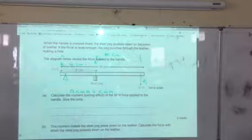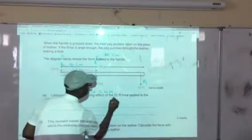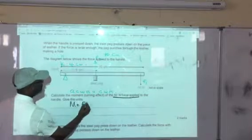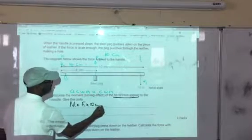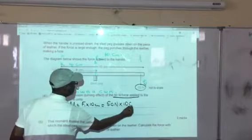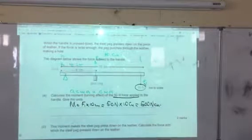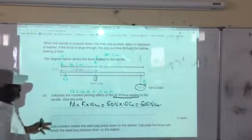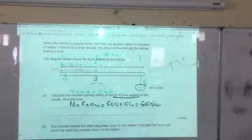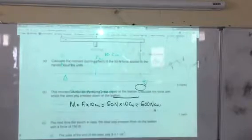Give the moment of the 50 newtons force. The moment of the 50 newtons force will be F1 times 10 centimeters, which is 50 newtons times 10 centimeters, which equals 500 newton centimeters. That will carry two marks because the definition of moment itself will be one mark, and the correct answer with the correct unit will be the second mark.